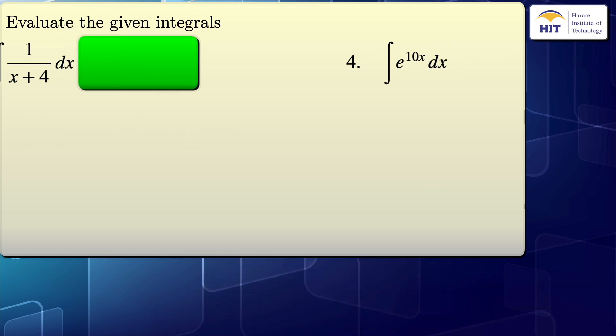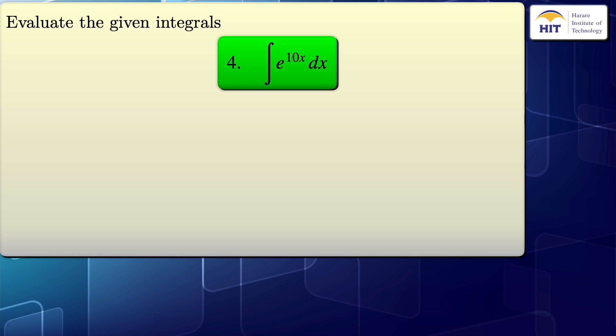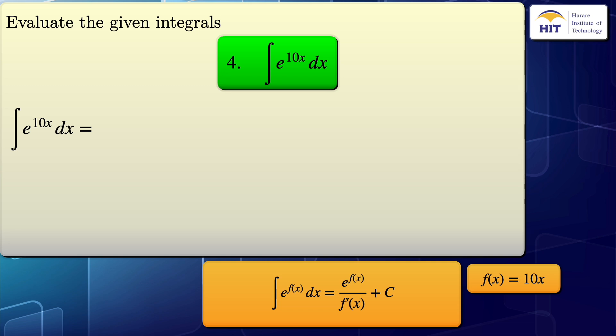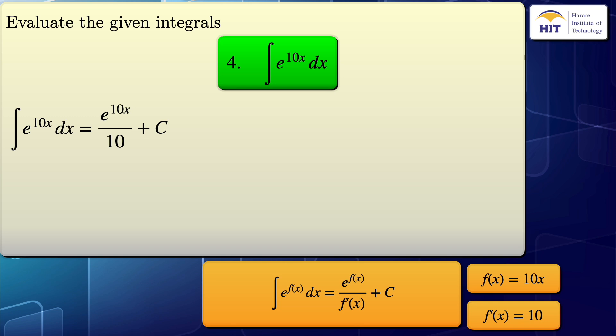I will now move on to the last integral: the integral of e to the power of 10x with respect to x. To evaluate this, I will use this formula: the integral of e to the f(x) with respect to x is equal to e to the f(x) divided by f prime of x, plus the constant of integration, c. By comparison, our f(x) is equal to 10x. To get f prime of x, we differentiate 10x to get 10. Substituting these values into the formula, our final result is e to the 10x over 10 plus c.